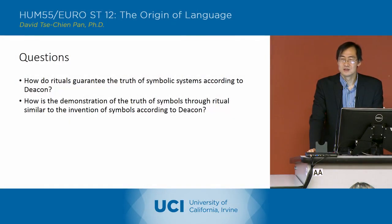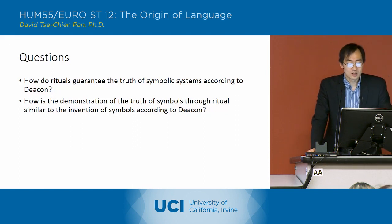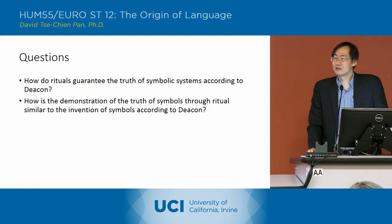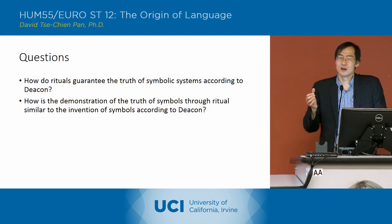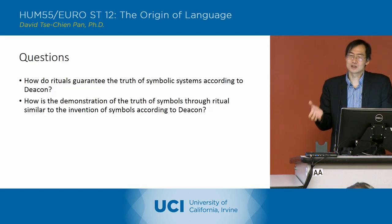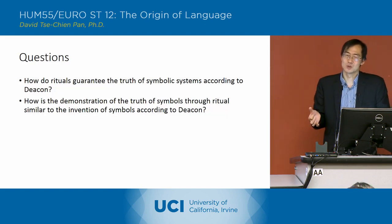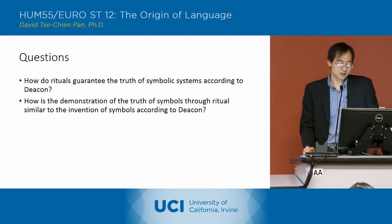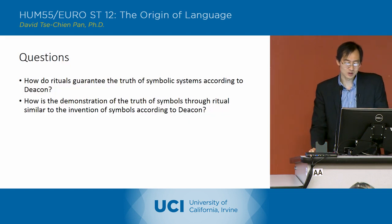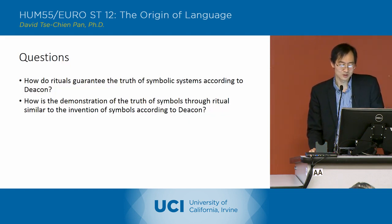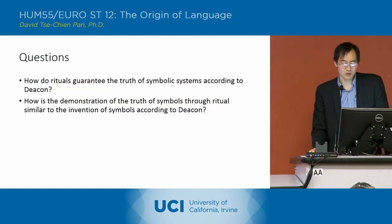Questions? How do rituals guarantee the truth of symbolic systems according to Deacon? So they do so by leading those symbolic relationships back to the indexical relationships that are the basis of the symbolic relationships. And how is the demonstration of the truth of symbols through rituals similar to the invention of symbols according to Deacon?